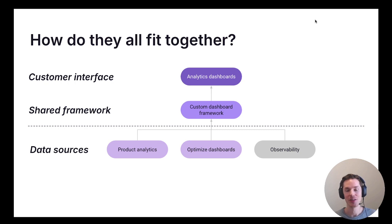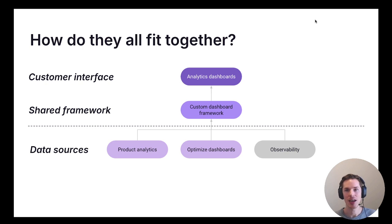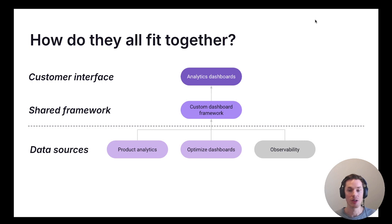How does this all fit together? This gives you an overview. The important part to focus on is that dashed line in the middle. At the top we have the pre-built stuff — the shared framework and the analytics dashboard view. At the bottom is where product teams fit in: you build the data sources, the client that fetches data from the GitLab API, ClickHouse, or wherever, transforms it into the standard dashboard format, and feeds it into the custom dashboard framework. That then empowers users to build dashboards, or allows your team to use the custom dashboard framework to build pre-built dashboards.